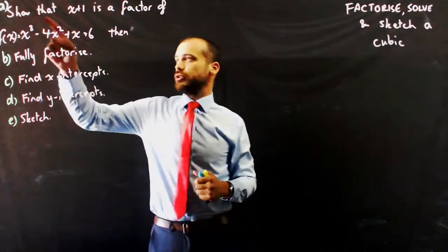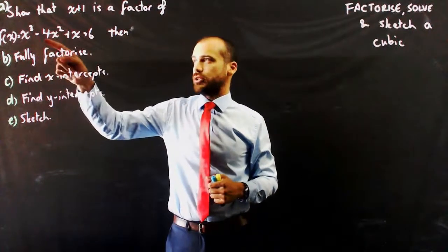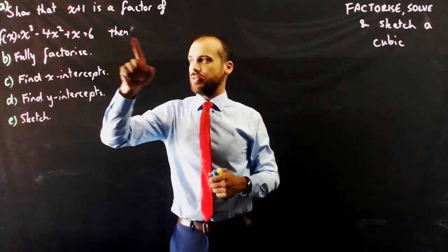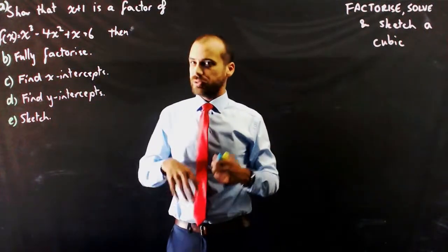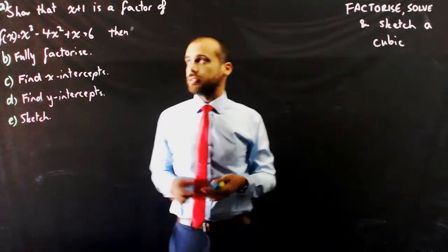So, show that x plus 1 is a factor of f of x equals x cubed minus 4x squared plus x plus 6, then fully factorise it. I'm going to do some polynomial division to do that, find the x intercepts, find the y intercepts, and then sketch it.